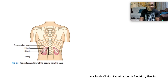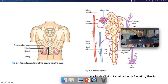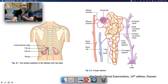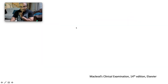Taken from McLeod's, the kidneys sit retroperitoneally just behind the 11th rib — right and left. The functional unit of the kidney is the nephron. We start with the vasculature: the afferent arteriole gives rise to the glomerulus and the efferent arteriole, and blood is filtered through a system of tubules — the proximal convoluted tubule, the loop of Henle (thin and thick wall segments, descending and ascending), the distal convoluted tubule, the collecting tubule, and collecting duct, exiting via the ureter.